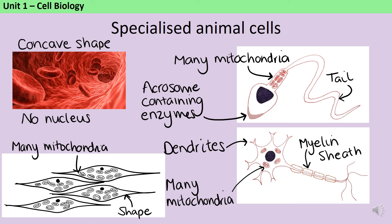Red blood cells carry oxygen around the body to all of the different tissues. They have a concave shape, which increases their surface area and therefore increases how quickly they're able to absorb oxygen. Also, they don't contain a nucleus, because a nucleus is quite a large structure which takes up quite a lot of room. So by not having one, they have far more room for the pigment haemoglobin, which needs to bind to oxygen.